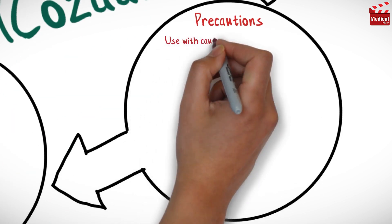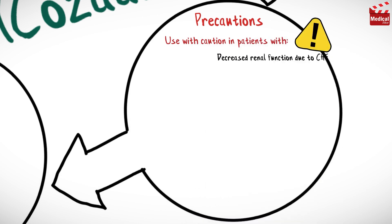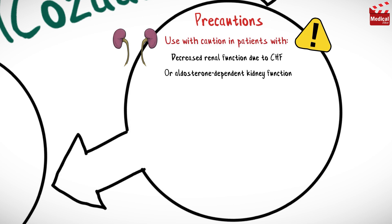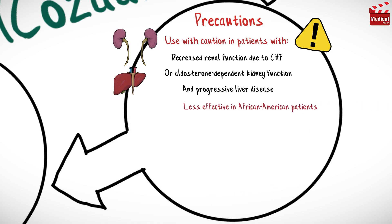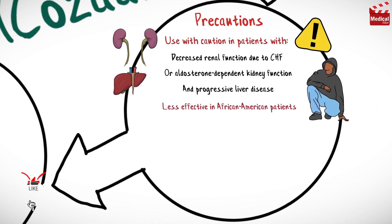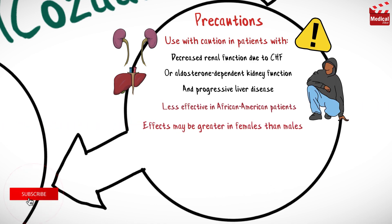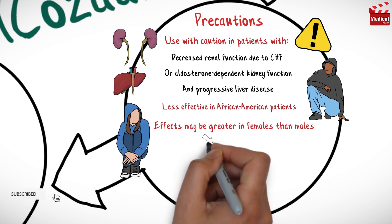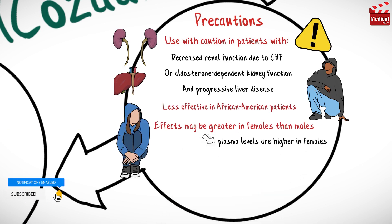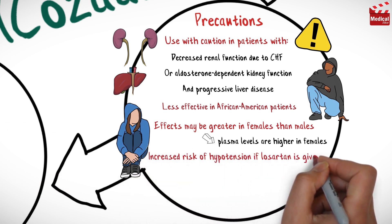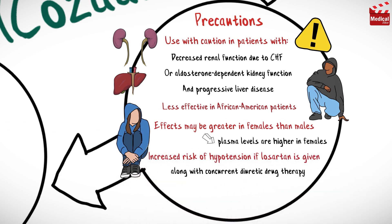Use with caution in patients with decreased renal function due to congestive heart failure or aldosterone-dependent kidney function, and progressive liver disease. Losartan is less effective in African American patients. Losartan's effects may be greater in females than males, as plasma levels are higher in females. There is an increased risk of hypotension if Losartan is given along with concurrent diuretic drug therapy.